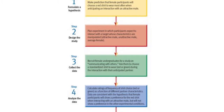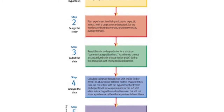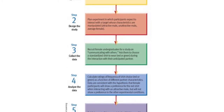In step three, they collect the data. They recruited female undergraduates for a study on communicating with others and asked them to choose a standardized shirt to wear — red or green — during the interaction with their anticipated partner.